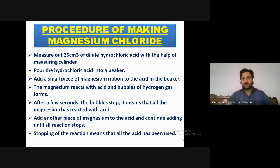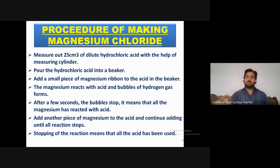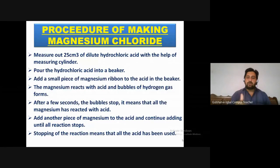As a student asked, we can see in the process what is happening: when the metal is added to the acid, the acid loses its properties and is converted into a salt.